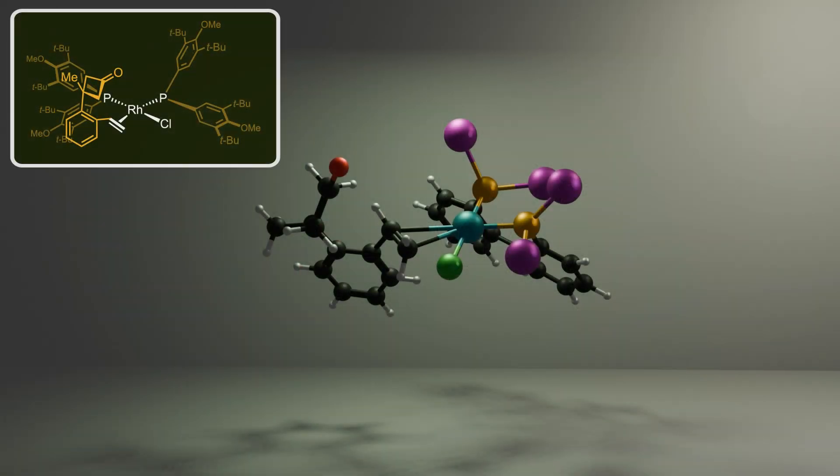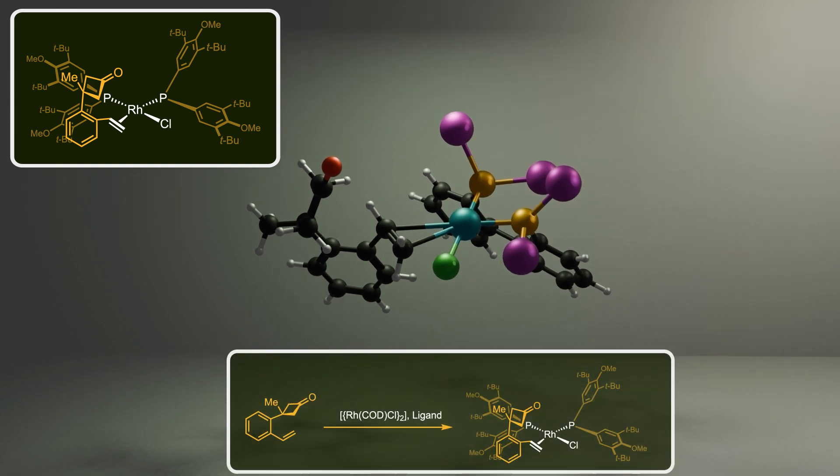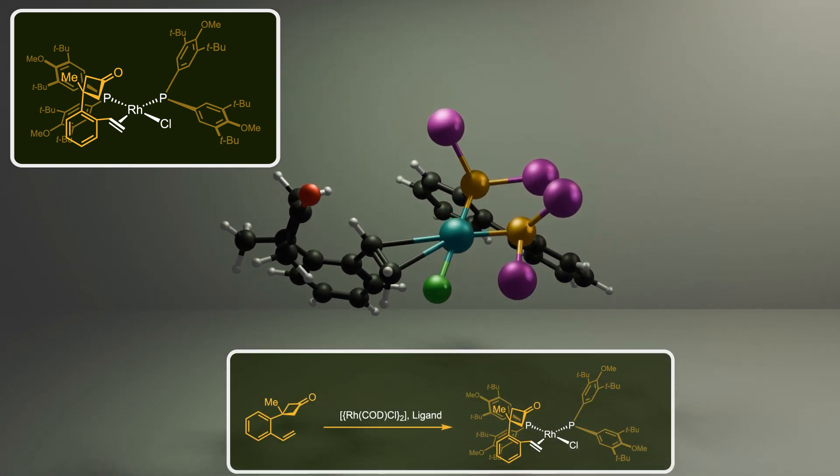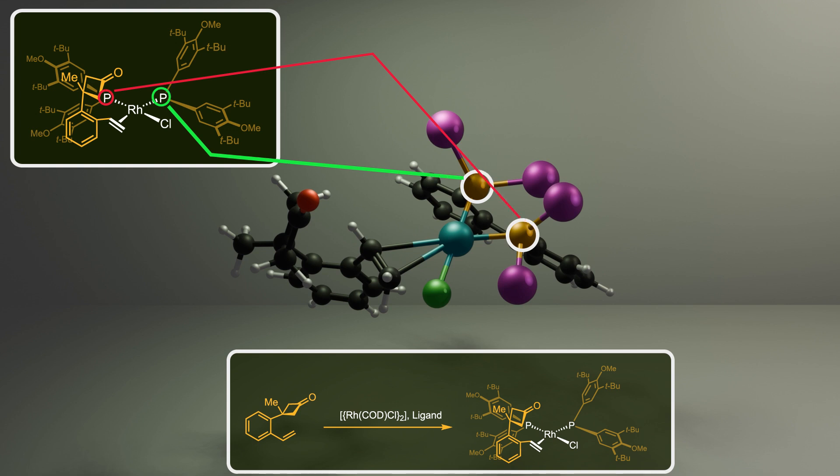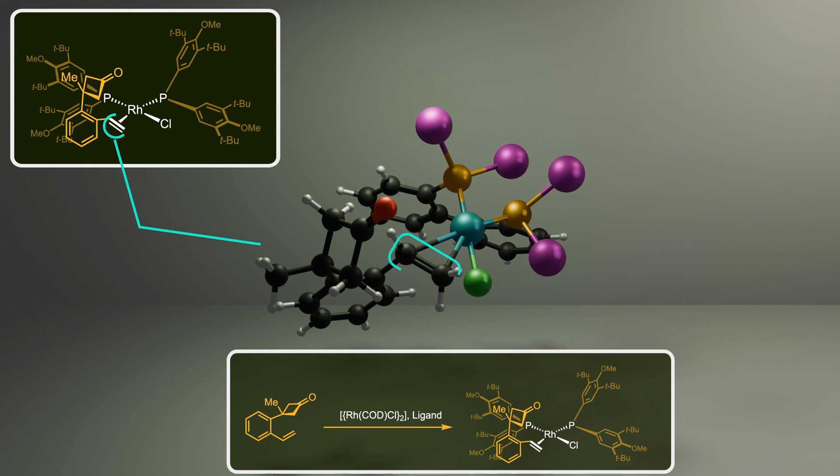First of all, the rhodium complex reacts with cyclobutanone and the DTBM-Phos ligand, creating a new square planar complex in which rhodium is attached to the two phosphorus atoms. On the other side, it's attached to the olefin moiety of cyclobutanone. After that, rhodium inserts to the carbon-carbon bond.